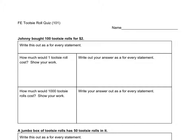Okay, this was just a practice quiz that I asked you guys to do. The first question says, Johnny bought 100 Tootsie Rolls for $2. And then I asked you to write that as a for every statement. So we would say, for every $2, we get 100 Tootsie Rolls.